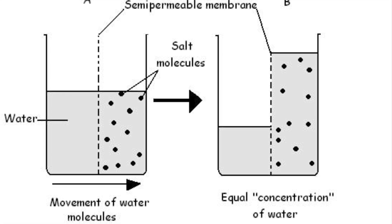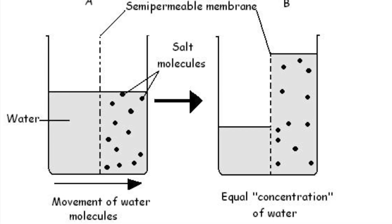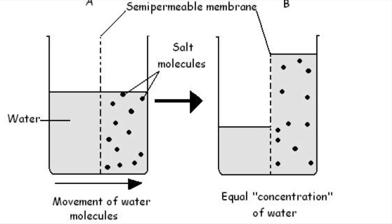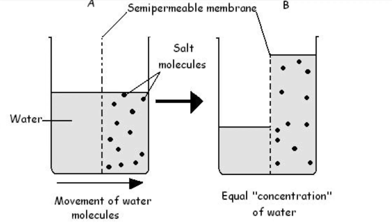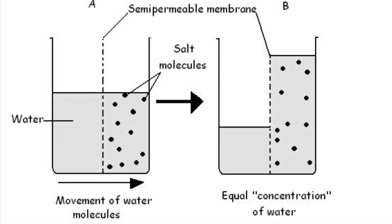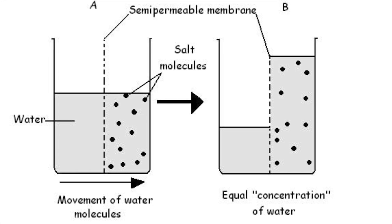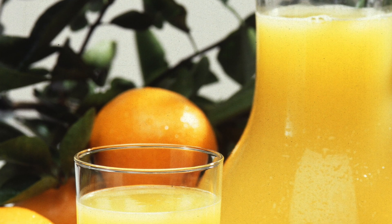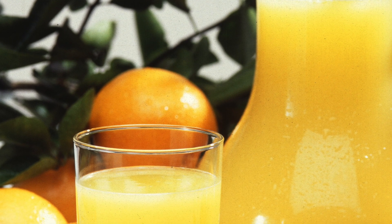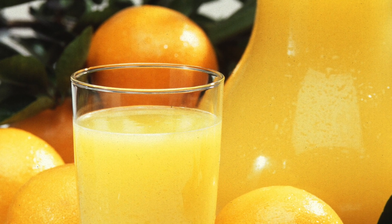Because there are more water molecules on one side than the other, there is a steady net flow of water molecules into the region with fewer of them. This is similar to diffusion. A dilute substance means the solution contains a high concentration of water and a low concentration of sugar, whereas a concentrated substance means there is a low concentration of water but a high concentration of sugar.